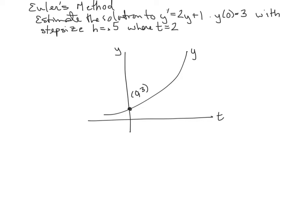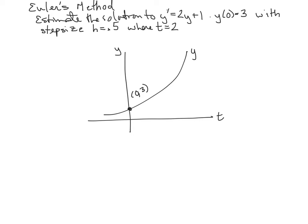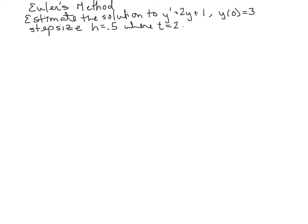I need to undo all of this. I had some technical difficulties there, but I was trying to erase. This thing wouldn't let me do it. I think I'm back on track. So we want to estimate the solution to this differential equation with a step size of 0.5, where t is equal to 2.